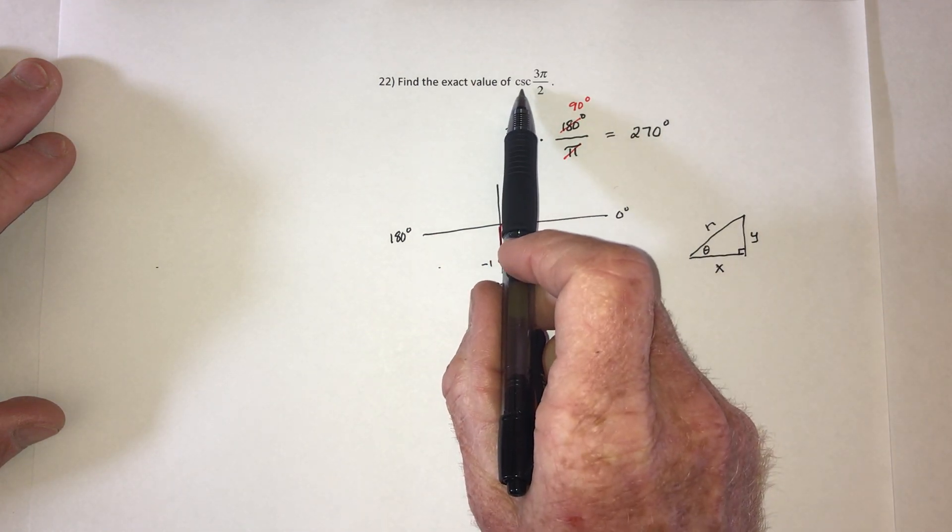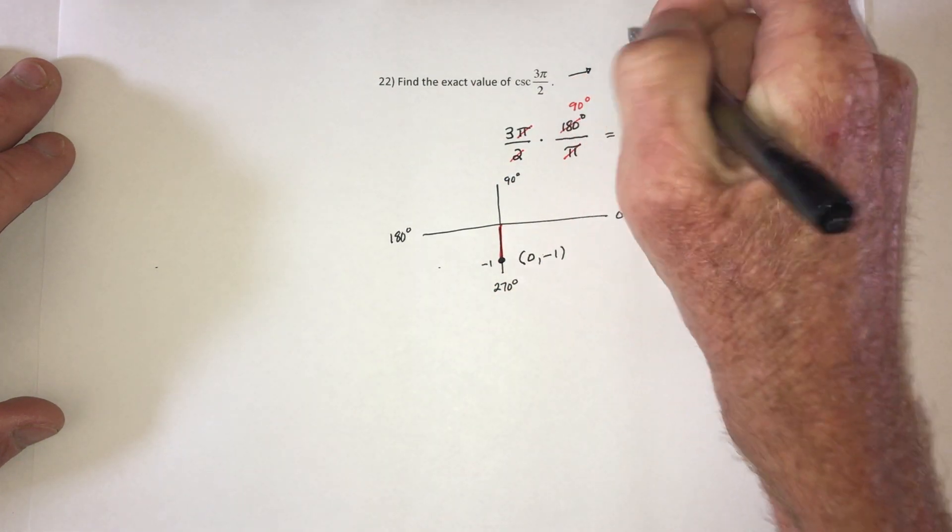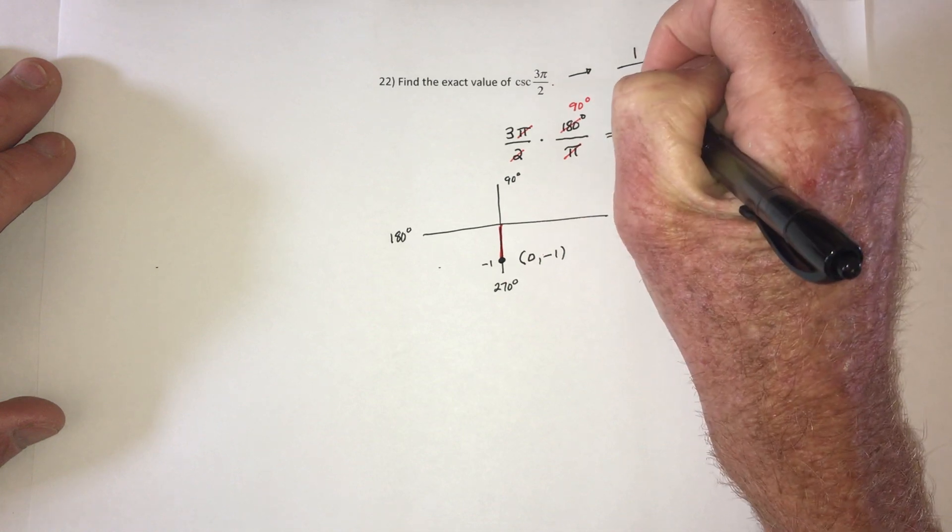For this one we're supposed to find cosecant, and then we're going to use the identity that cosecant is 1 divided by sine.